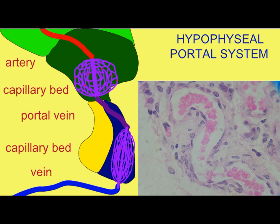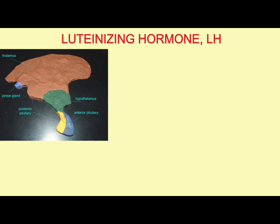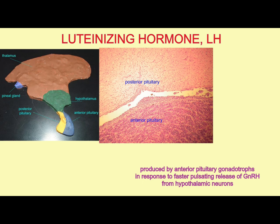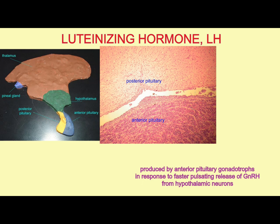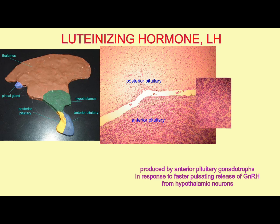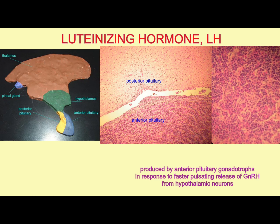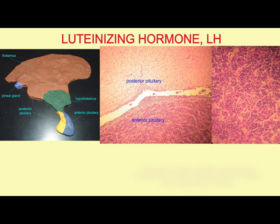Like all pituitary peptide hormones, LH possesses the same alpha chain, to which is attached a chain of 114 amino acids — the LH-beta chain. Different modifications of LH produce different isoforms, which vary in the carbohydrate chains attached, the sialic acid content, and sulfate groups.